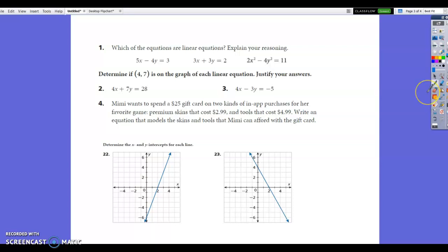Let's look at number 4. Mimi wants to spend $25 gift card on two kinds of in-app purchases for her favorite game. Premium skins that cost $2.99 and tools that cost $4.99. Write an equation that models the skins and tools that Mimi can afford with the gift card.